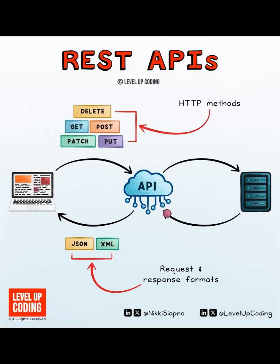What about the format of that data? REST APIs usually speak in JSON or XML — two languages that computers understand. JSON is lightweight and easy to read, while XML is more structured and used in older systems.